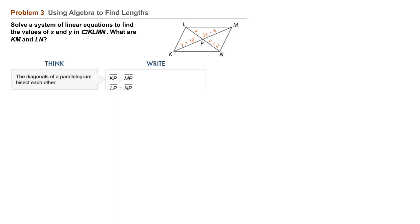Segment KP is congruent to segment MP, and segment LP is congruent to segment NP. We'll set up the system of linear equations by substituting the algebraic expressions for each segment length. So equation 1, Y plus 10 equals 2X minus 8, and equation 2, X equals Y plus 2.